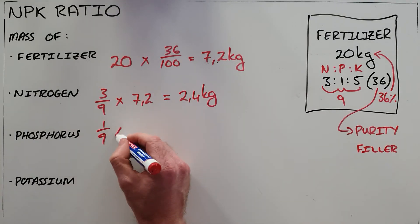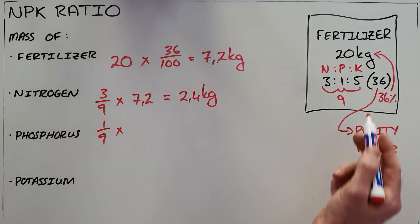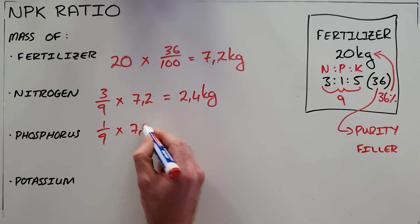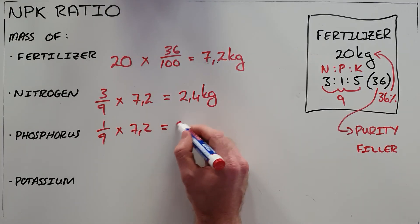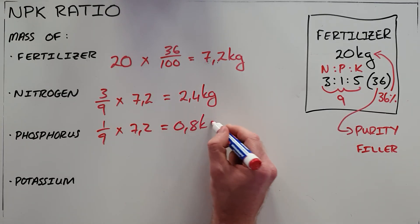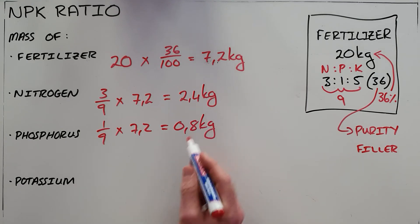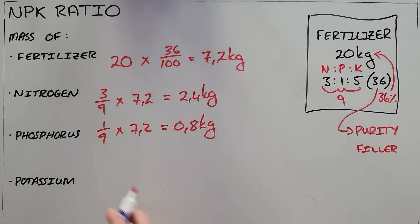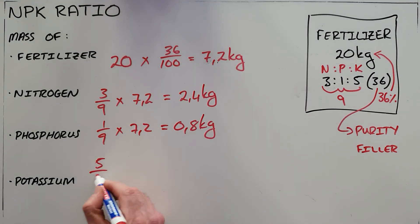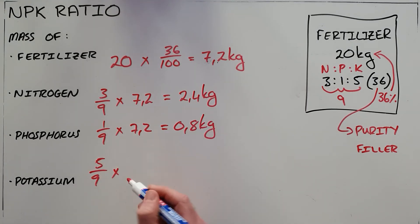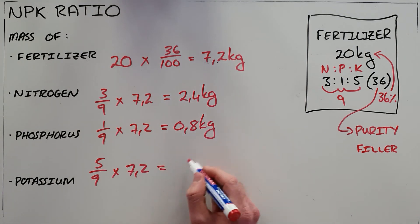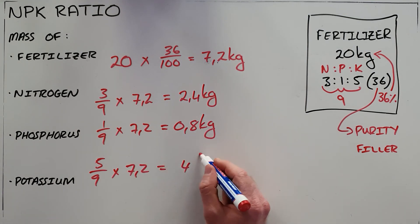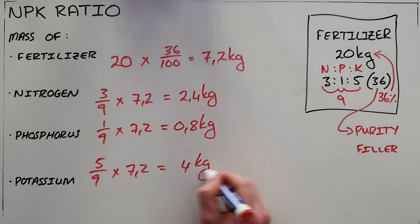The same calculation can be made for phosphorus, where we see that one part in nine is phosphorus. The mass of fertilizer is 7.2 kilograms, so 0.8 kilograms is phosphorus. Finally, five of the nine parts are potassium, which means that in this bag we will find four kilograms of potassium.